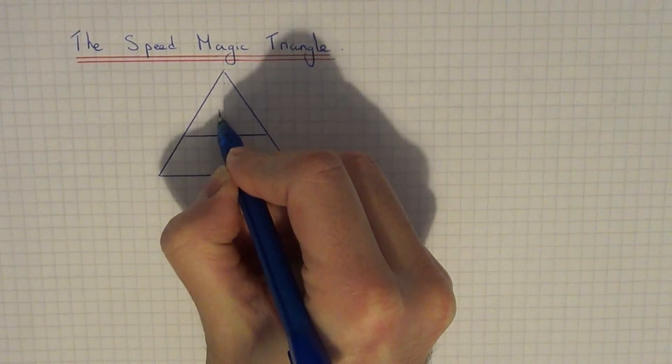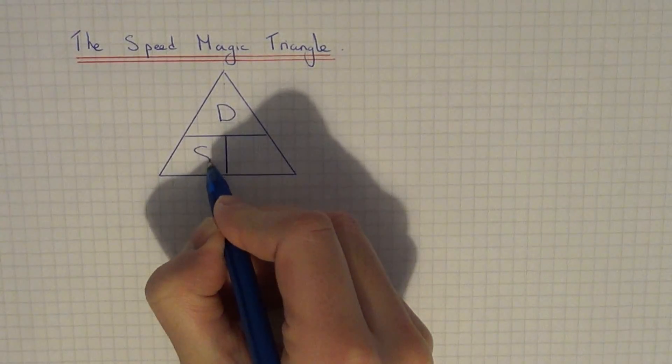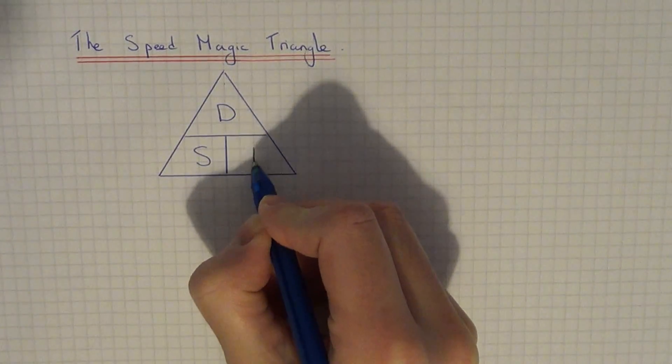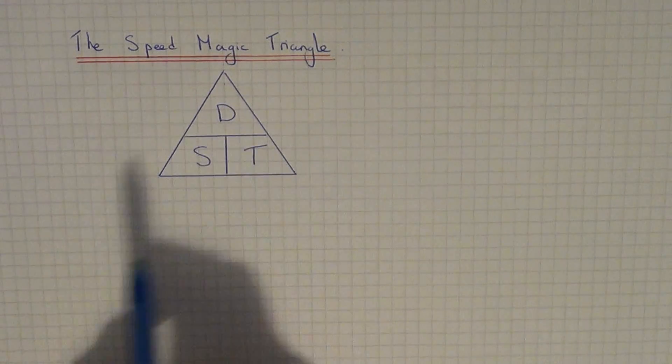The distance goes at the top of the triangle, the speed goes in the bottom left, and the time goes in the bottom right hand side of the triangle. So you see it's in alphabetical order.